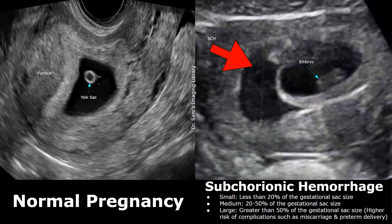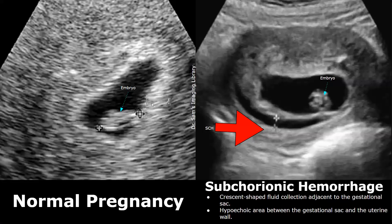This is another large hemorrhage. It is greater than 50% of the gestational sac size and carries a higher risk of complications. In the normal image on the left, you can see a smooth gestational sac with no hypoechoic fluid collection next to it. In the image on the right, a crescent-shaped hypoechoic fluid collection is seen near the gestational sac — this is the subchorionic hemorrhage.